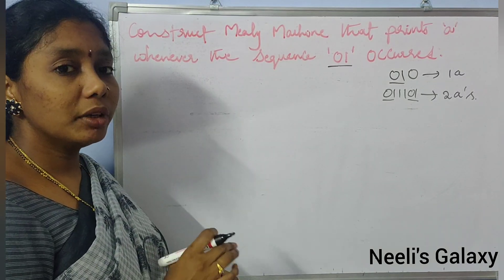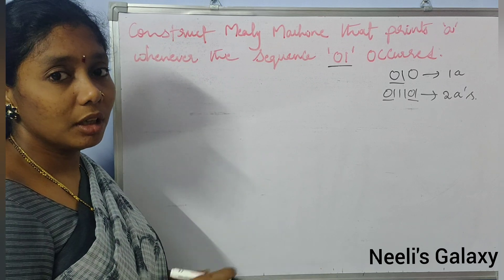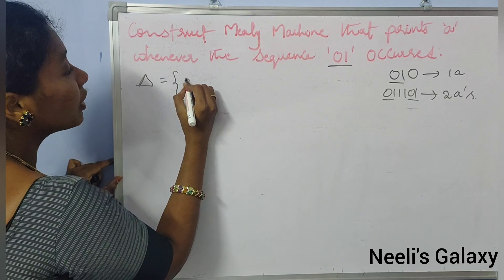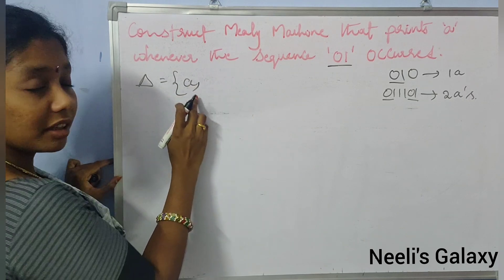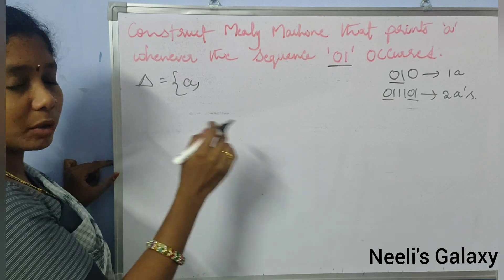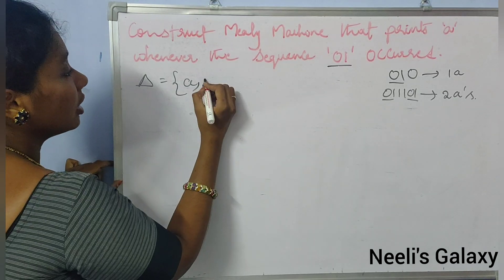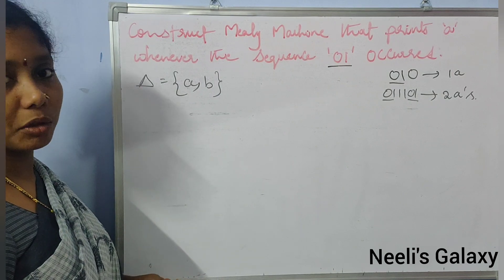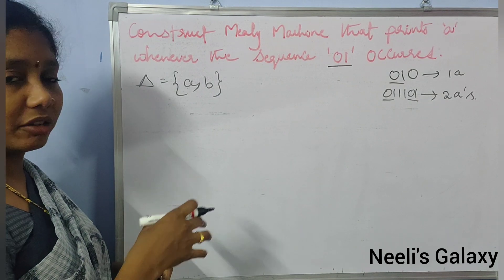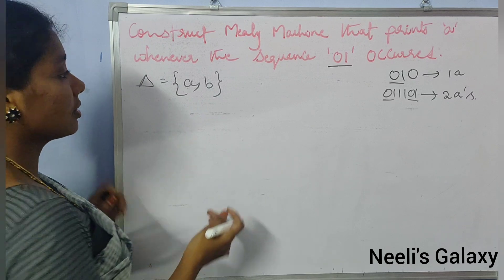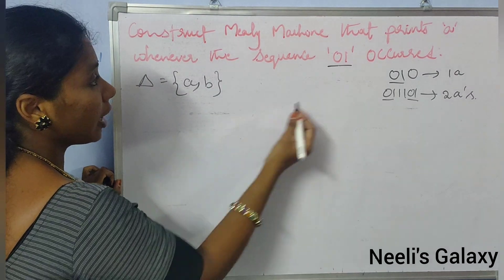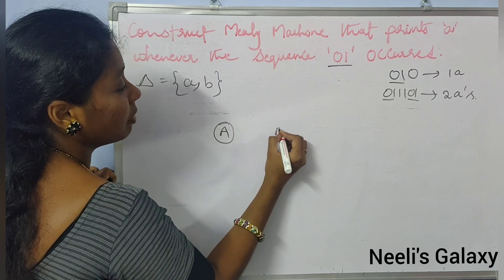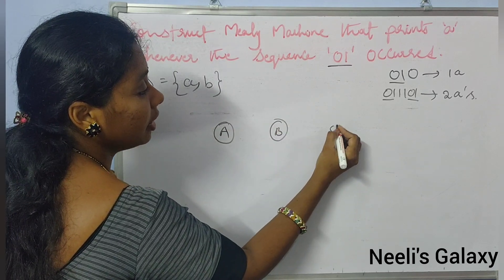For that, we need to define the output string of the Mealy machine. We can take A for indicating the success state, and B for indicating the failure state. To accept the minimal string 0-1, we need to have 3 states.